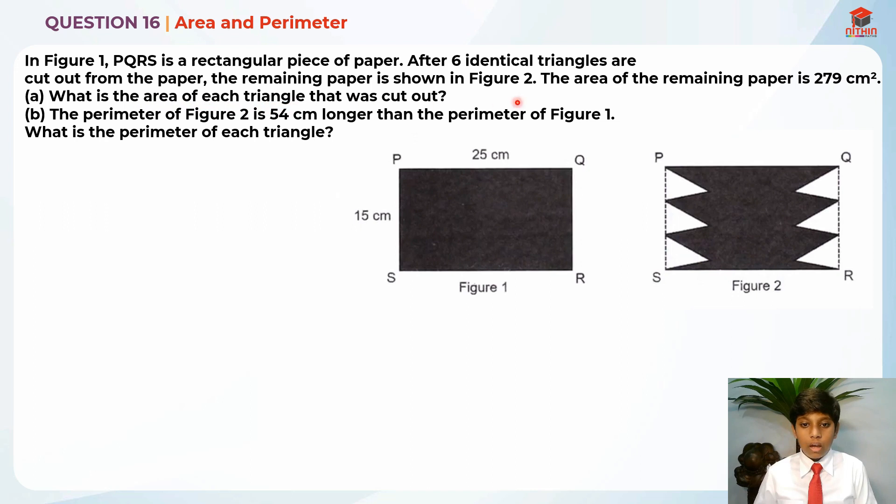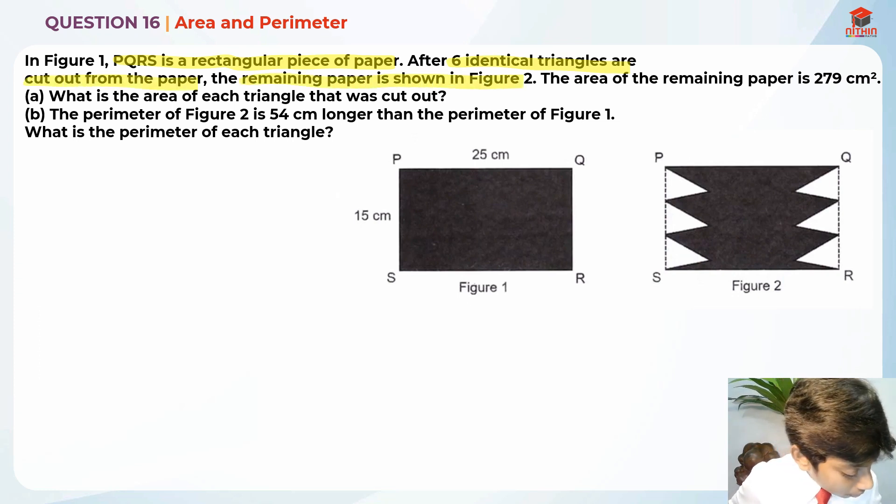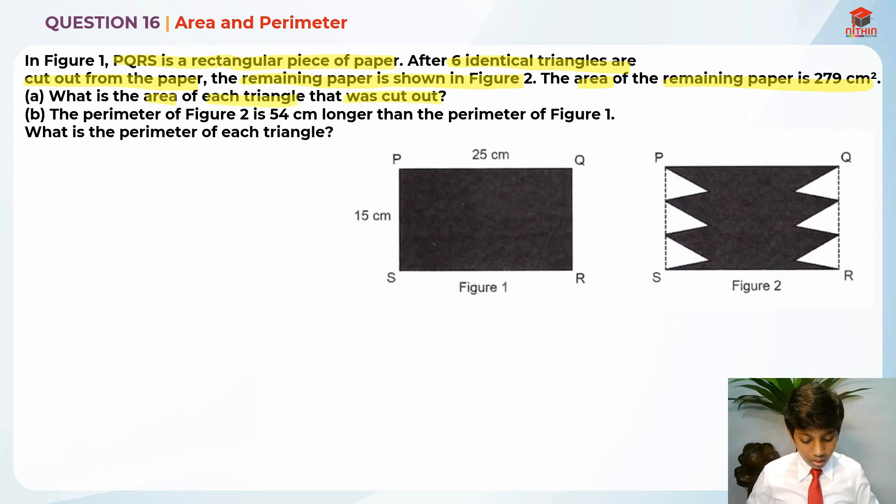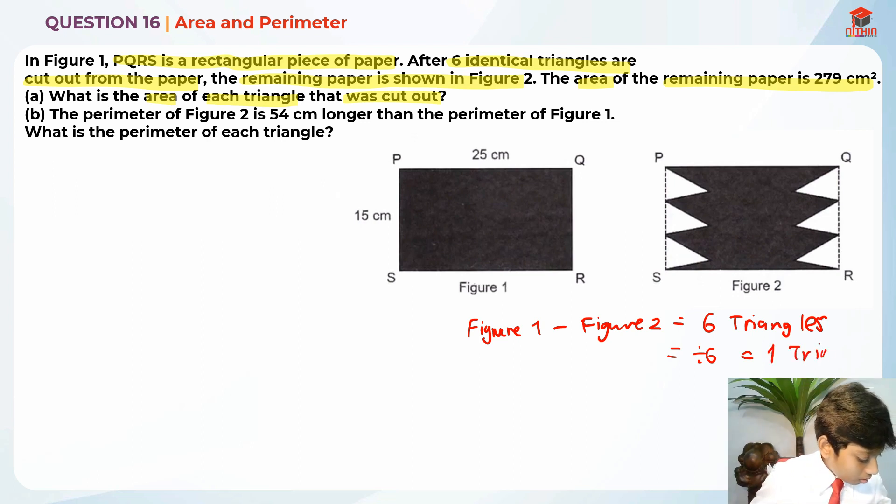In order to solve this question, we need to take area of figure 1, the rectangular piece of paper, figure 1 minus figure 2, which will give us 6 triangles. And these 6 triangles, we can divide by 6, which equals 1 triangle. This is how we find the answer.